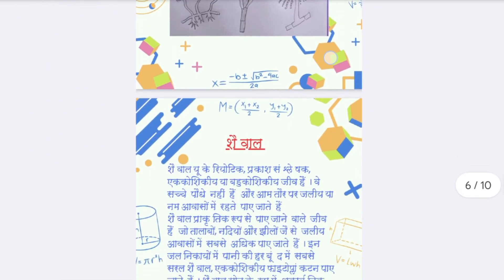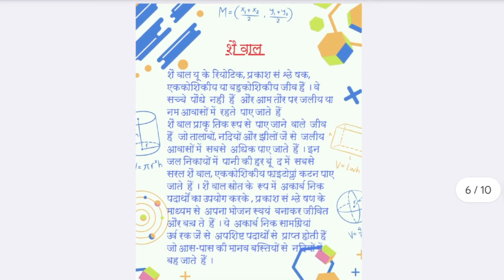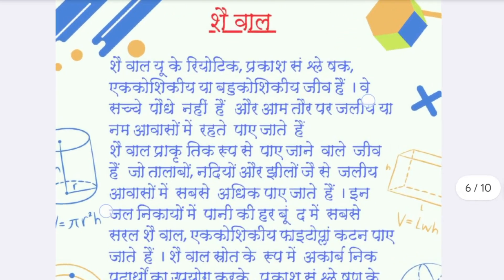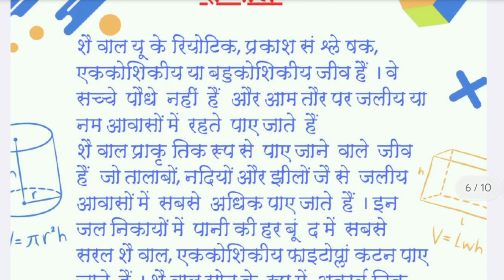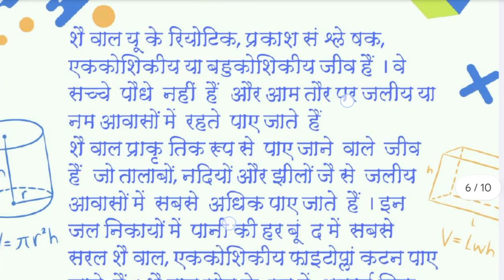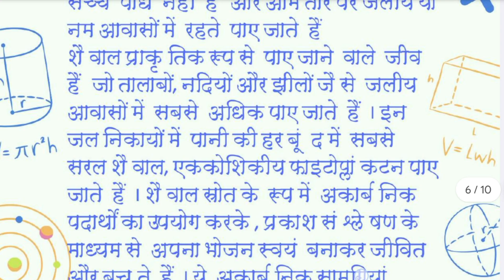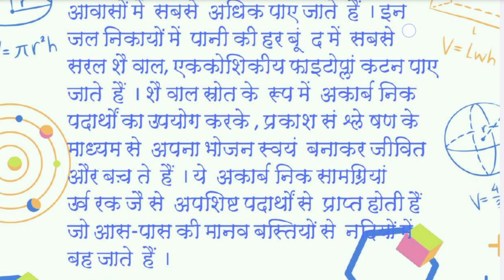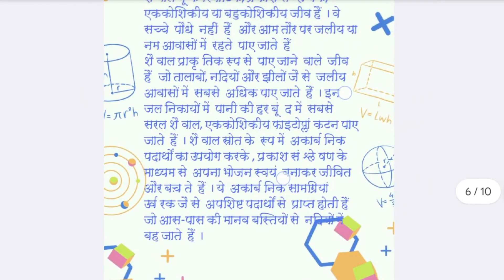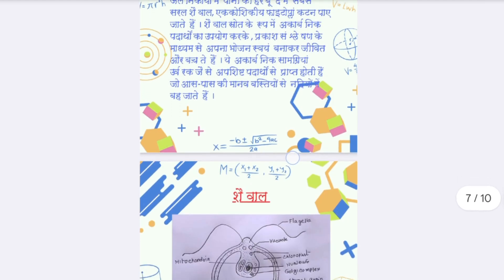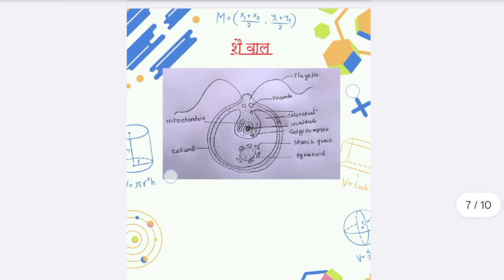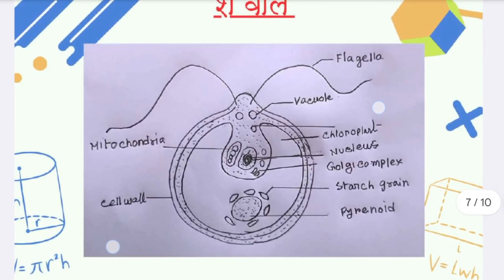The next page covers Susham Jeevanu, Kavak, and Shaival — this is how you can write information about it. After it, on the next page is the diagram of Shaival, and this is how you can draw the diagram.